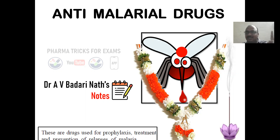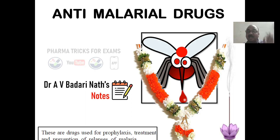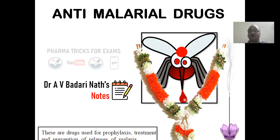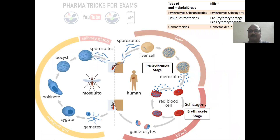See here the definition: these are the drugs used for prophylaxis — meaning to avoid — treatment, and also for the prevention of relapses of malaria. This is the definition you have to write in the examination. Don't write that anti-malarial drugs are used to kill the mosquito.